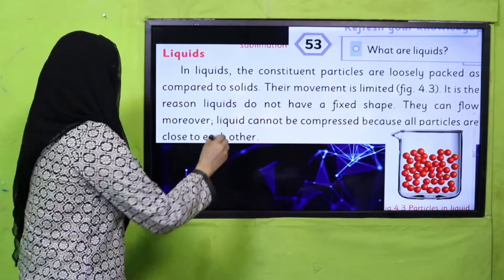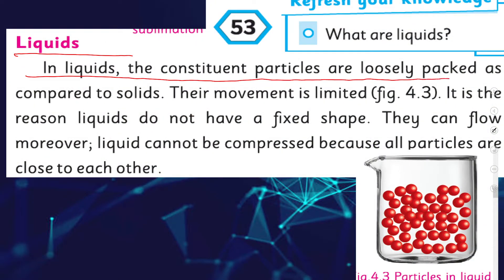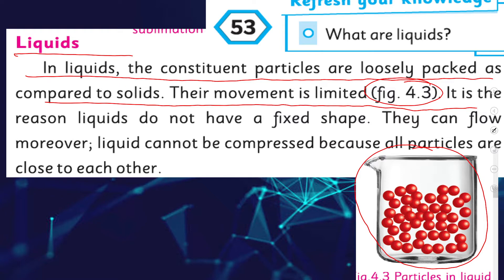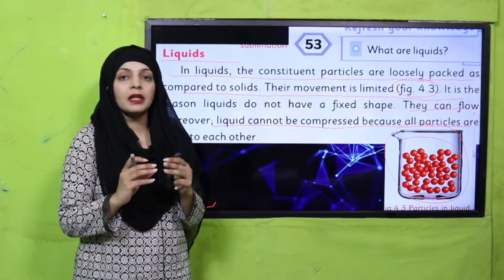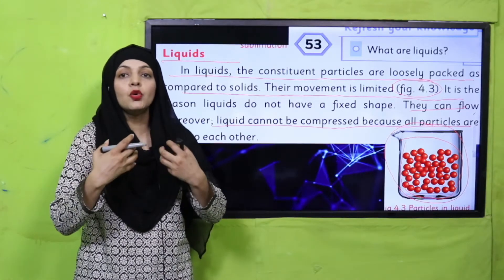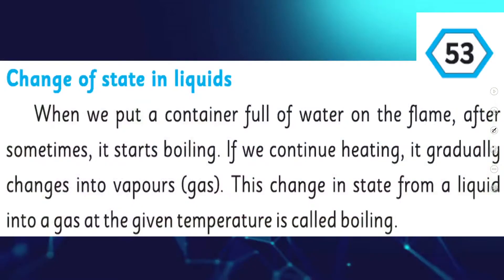I hope everybody has opened the page. Let's start the reading. In liquids, the constituent particles are loosely packed as compared to solids; their movement is limited, as you can see in figure 4.3. Is container mein liquid hai jis mein liquid ki shape usko ikhtiar kar liya — agar isko kisi doosri shape mein daalenge toh woh waisa ho jayega. Liquid ke particles loose hote hain but still they are close to each other and they can flow. Moreover, liquid cannot be compressed because all particles are close to each other — solid ki particles bohot zada kareeb hoti hain, liquid ki particles loosely close hoti hain, yani bilkul tightly packed nahi hoti.